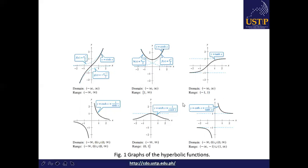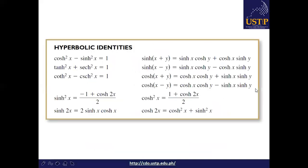Cosh(x) and sech(x) are even functions. The rest are odd functions. Here are some of the hyperbolic identities, which are also similar to our trigonometric identities. Write these in your power notes to remember and familiarize the following hyperbolic identities.